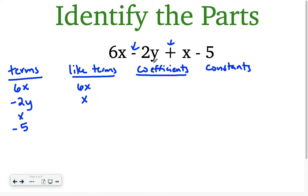There's nothing that's similar with the y, and there's no other just regular number. My coefficients are 6, negative 2. And then don't forget that in front of this x, there's an invisible 1. A lot of people forget to write down that as a coefficient, but it is there. And then constants, so the numbers without any variables. In this case, just negative 5. So that's how I would identify the parts for this problem.